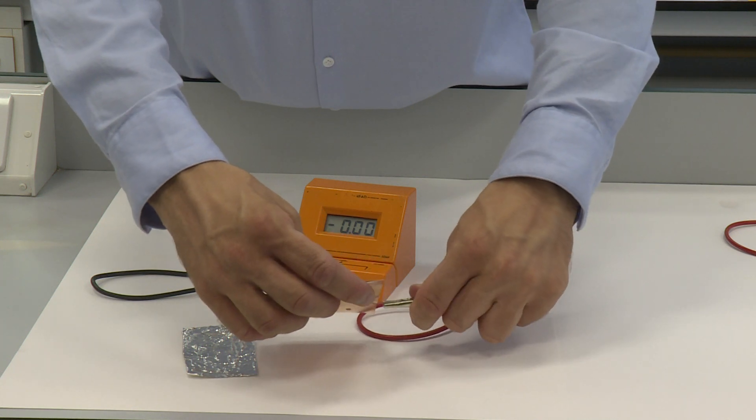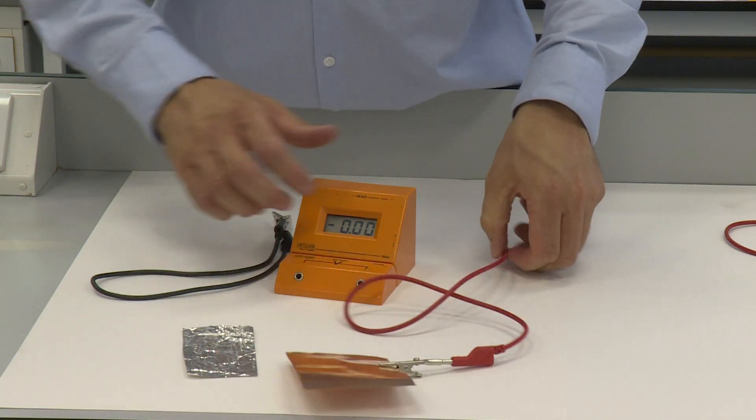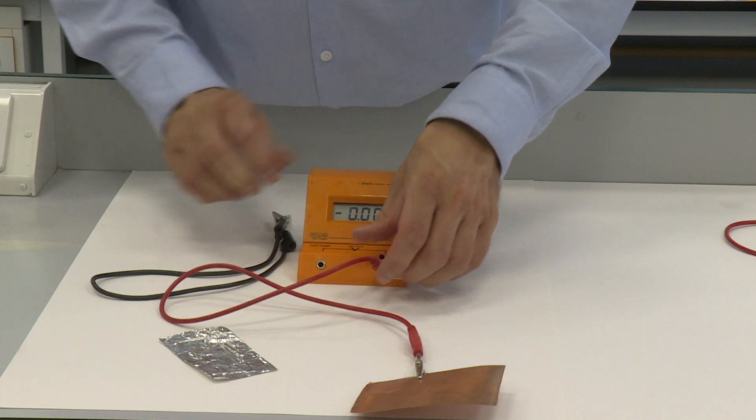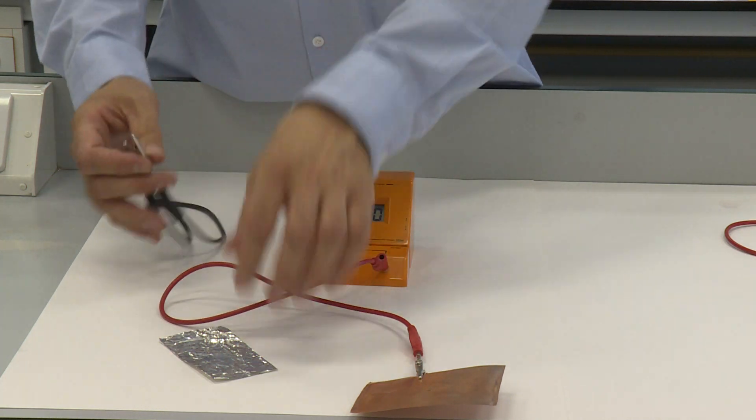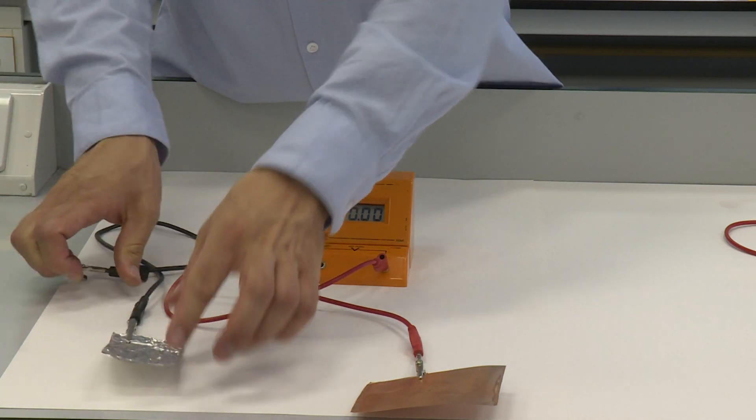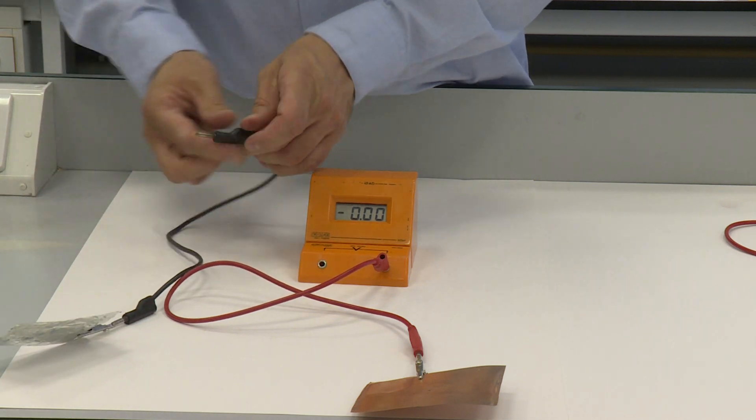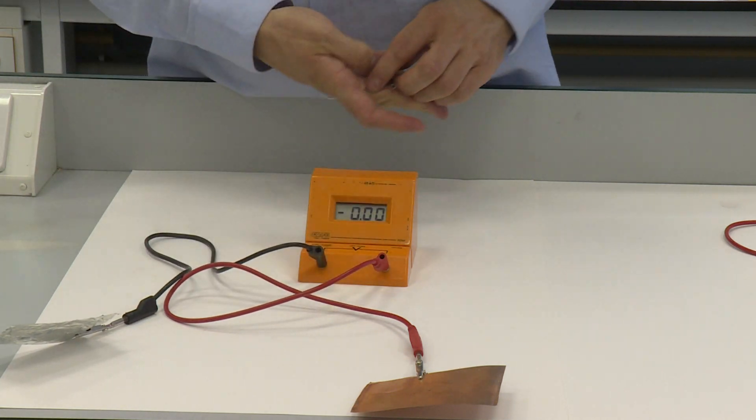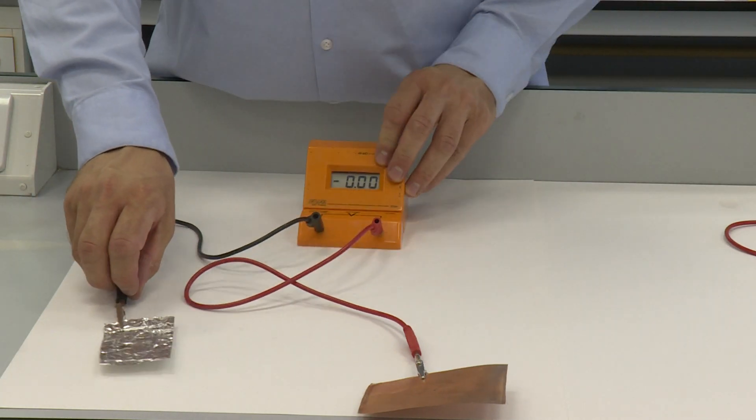and I'm going to attach a piece of aluminum foil, just like you find in your kitchen, to the voltmeter. Then what I'm going to do is I'm going to put one of my hands on each piece of foil